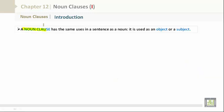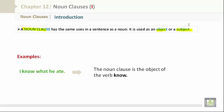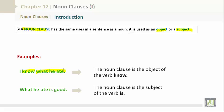Now, let's have a little introduction. A noun clause has the same uses in a sentence as a noun. It is used as an object or a subject — we learned this in Grammar 1, 2, and 3. For example: 'I know what he ate' — the noun clause 'what he ate' is the object of the verb 'know.' And 'What he ate is good' — the noun clause 'what he ate' is the subject of the verb 'is.'